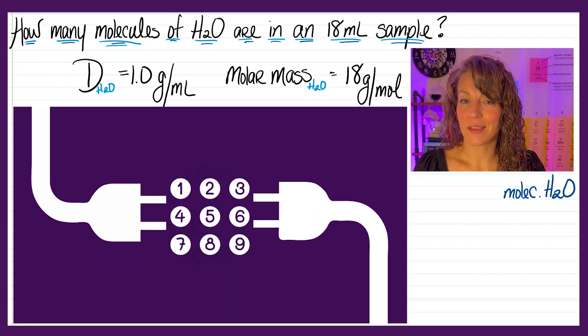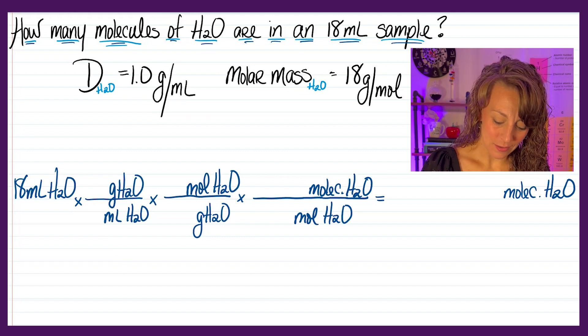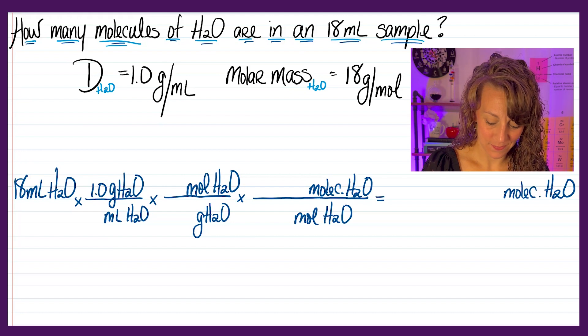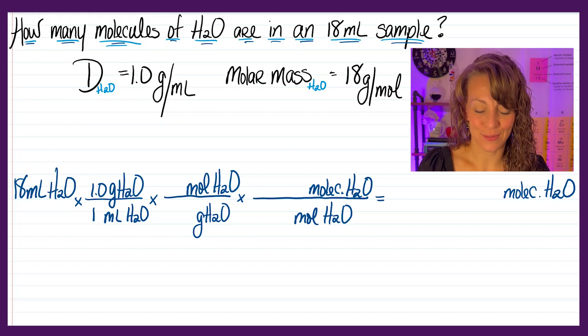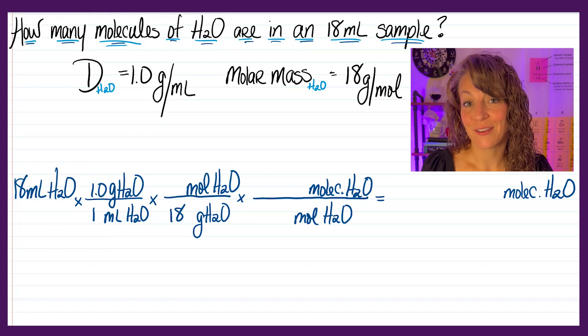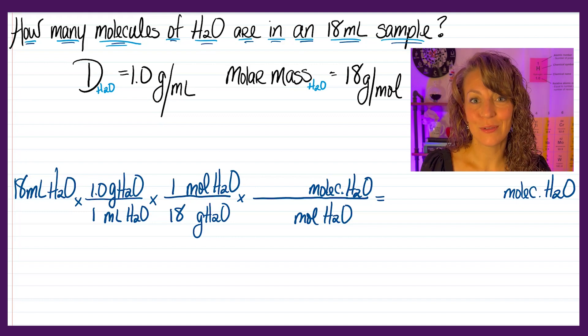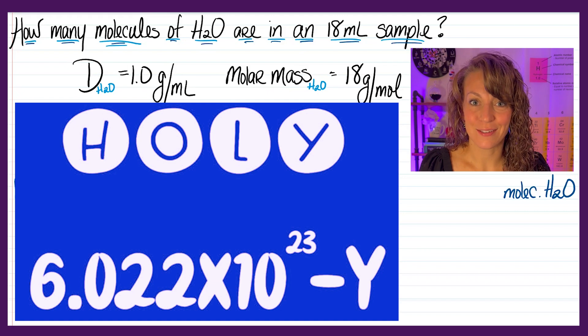All I have to do now is plug in some numbers. For the first ratio, for every one gram of H2O, I have one milliliter. For the second ratio, for every 18 grams of water, I have one mole of water. And then for the final one, for every one mole of water, I've got 6.022 times 10 to the 23rd molecules of water.